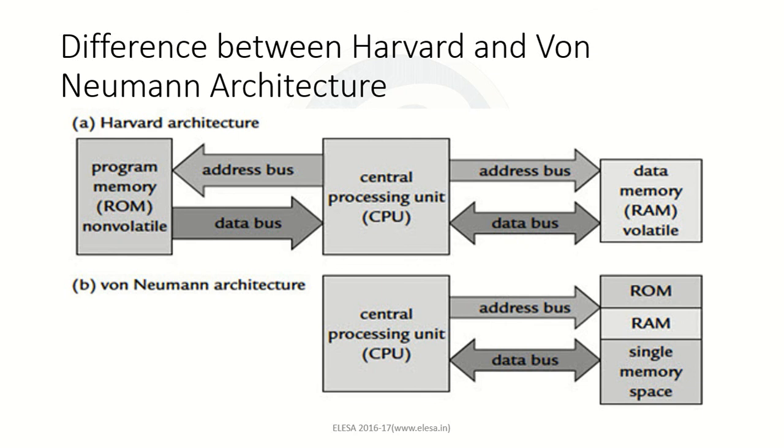Because we have two different memories in Harvard architecture, it occupies more space. Von Neumann architecture occupies less space. Coming to the speed, since we have two different memories for performing those actions like reading the memory and for the random access memory, we have two different sets of memories. The processing becomes fast in Harvard architecture.